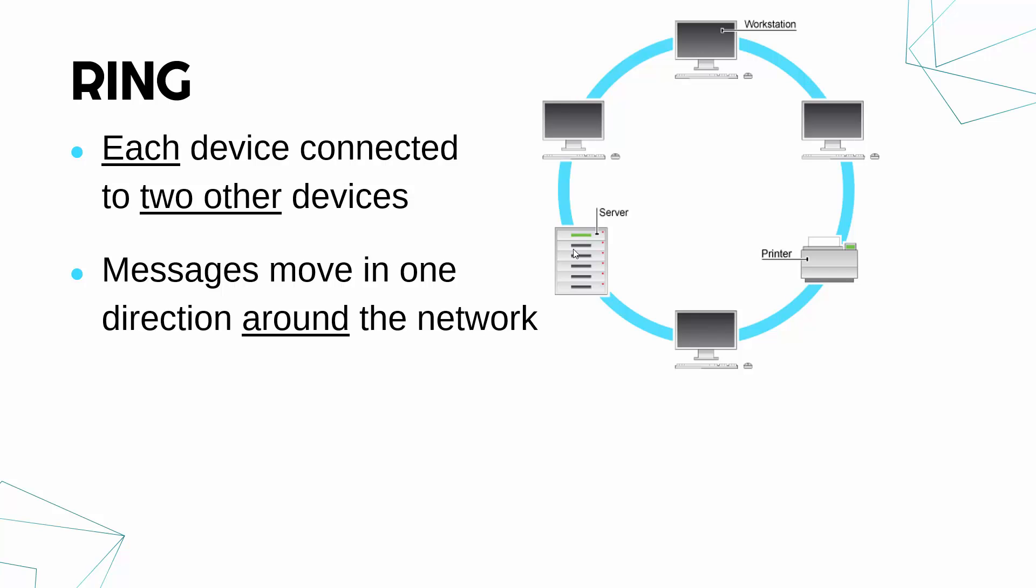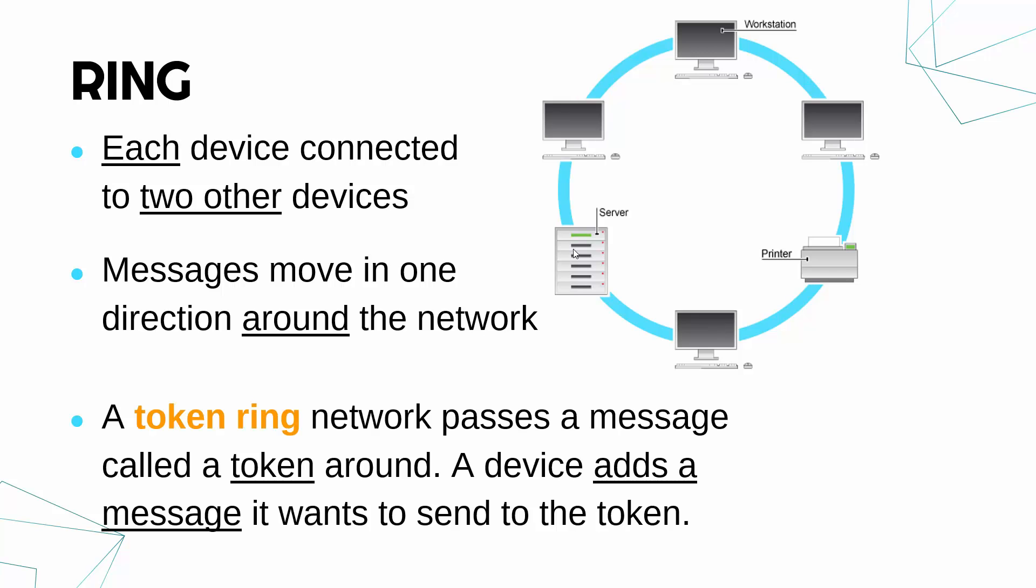There is a particular type of ring topology you've got to know about, which is not used very much anymore. But it used to be used quite a lot in business networks. This is called a token ring network. In a token ring, there will be a message passed around called a token. And a token is just a big message which is pretty much blank. The token is constantly going around the network in one direction, always passing around, never stopping.